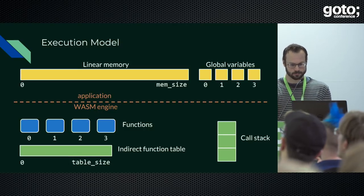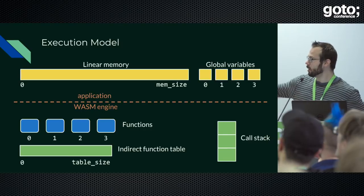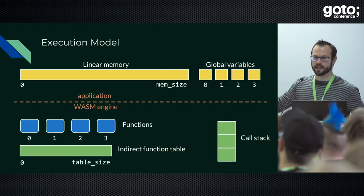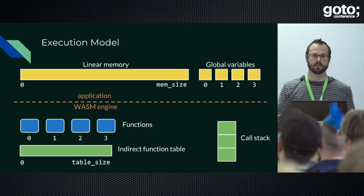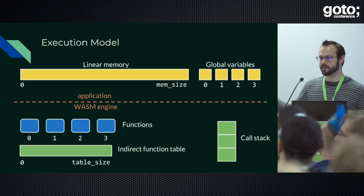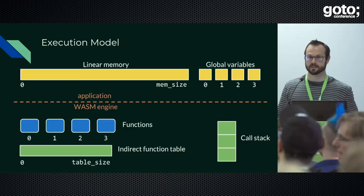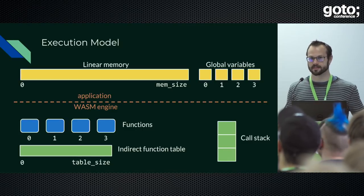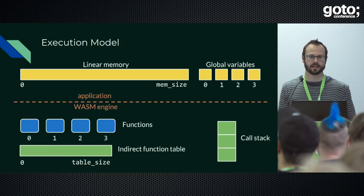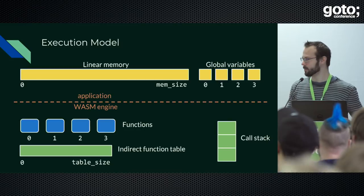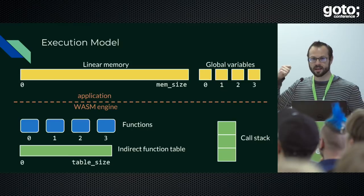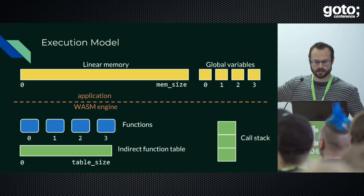Above the dashed red line in the execution model diagram is application state — state that your program can change by executing instructions. Things below the line you cannot directly change or address, and this is basically how we accomplish sandboxing. In x86, at the machine level, you can address the stack and smash the stack — that's a huge security vulnerability. We didn't want that for the web. So the call stack is something you cannot directly address, and no bug in your program can cause the call stack to become corrupted.